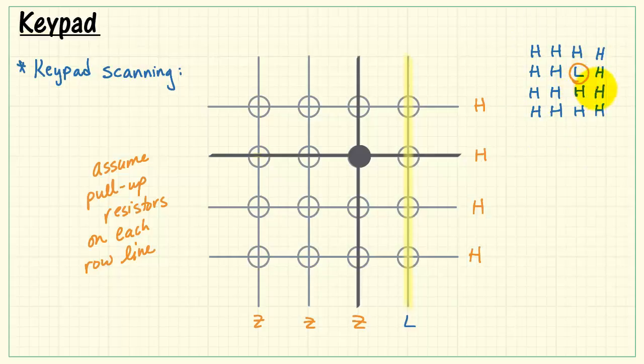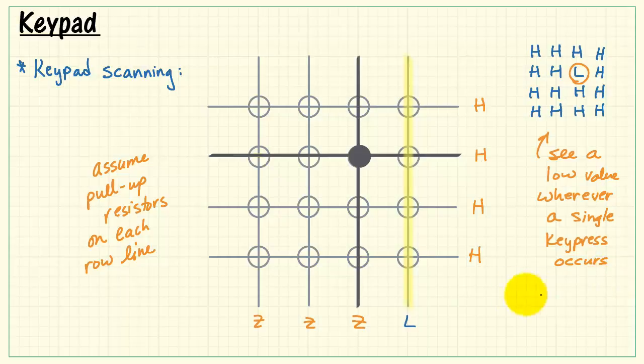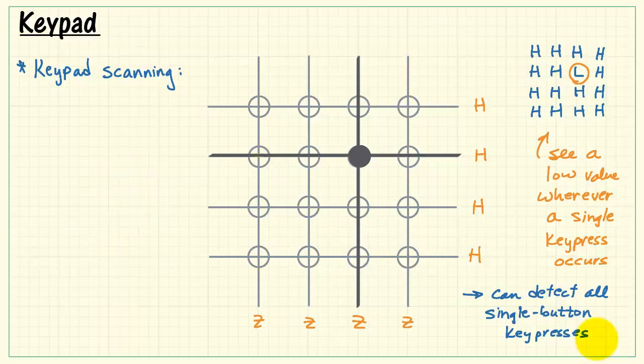And looking at this, we see that we detected a single location where the line was pulled low. And in general, this is the result of the scanning process. We see a low value wherever a single key press occurs. Now we can detect all possible single button key presses this way.